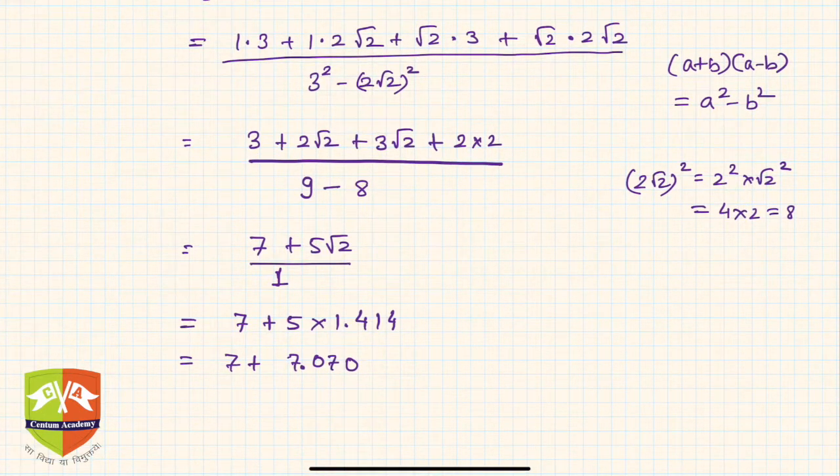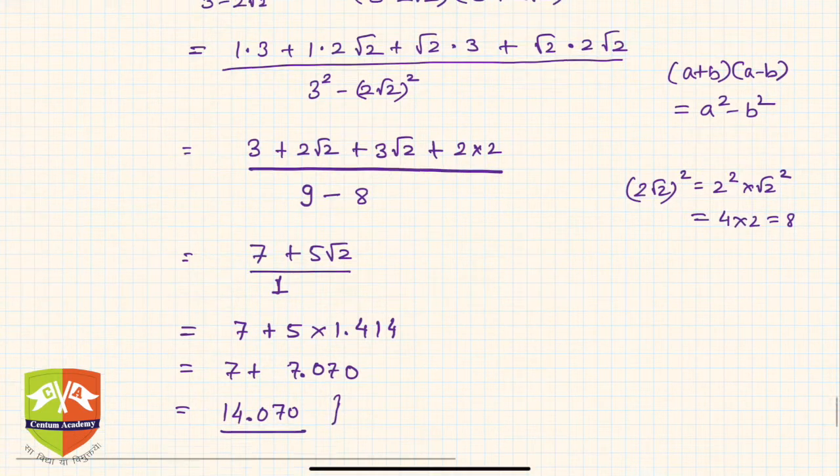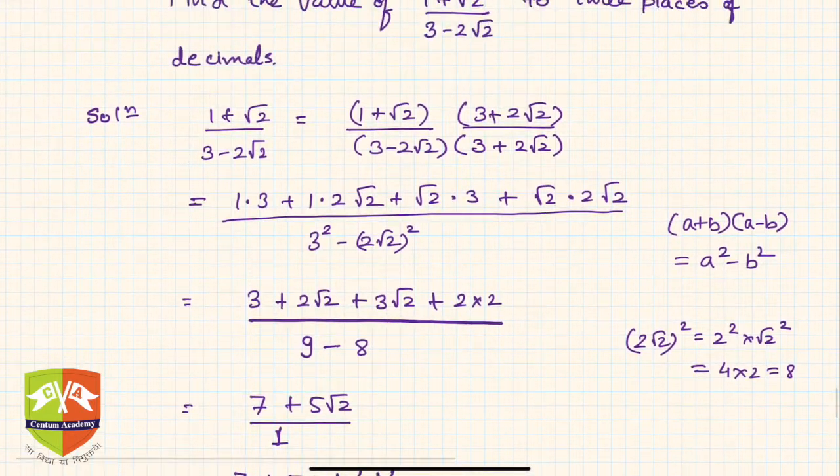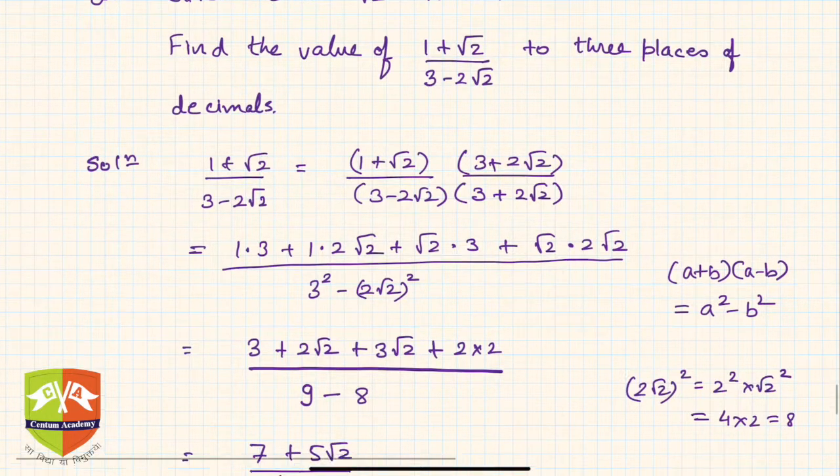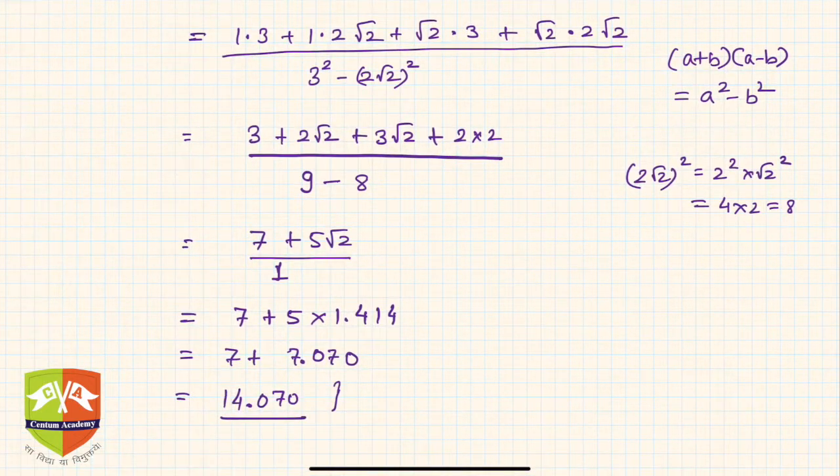This is the value. Hence, added 7 to it, you will get 14.070. This is how we obtain the value of the given surd. The moment one of the values of root 2 was given, we could obtain the value of the complete complex-looking surd into three places of decimal.